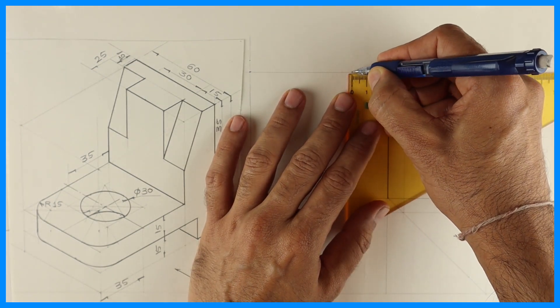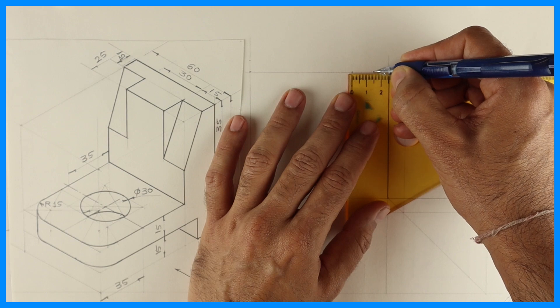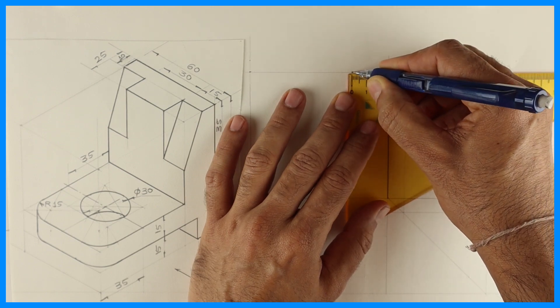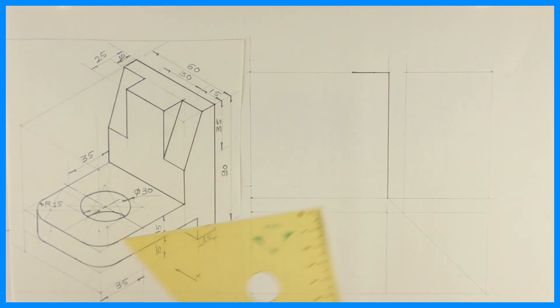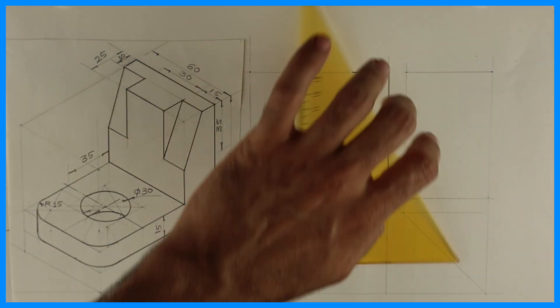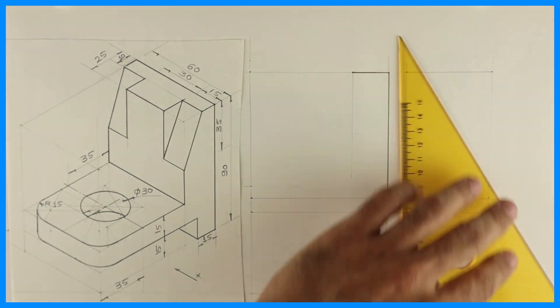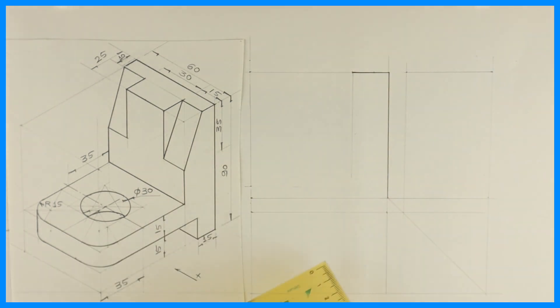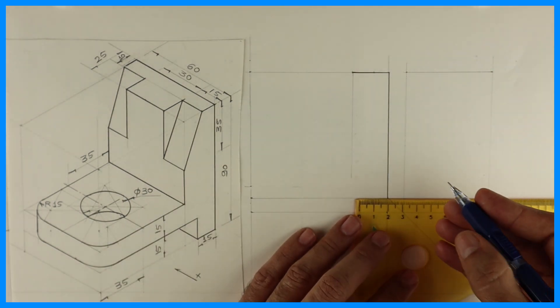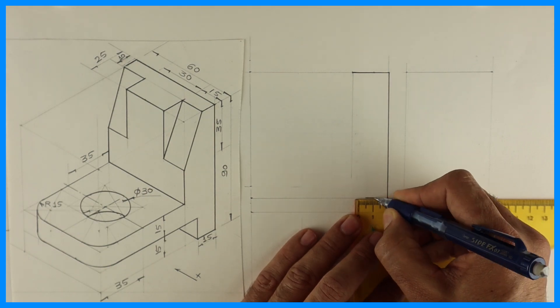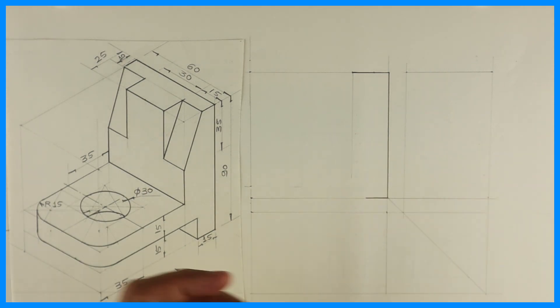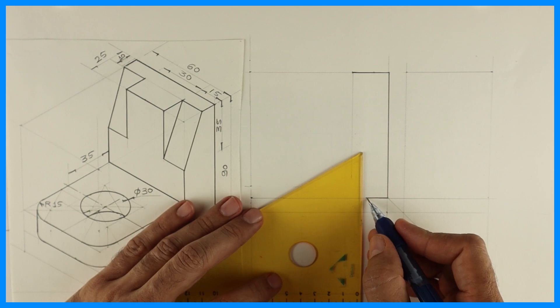Then we'll take 25mm in front view and we'll mark 10mm, then you go down straight. Here we'll take 15, then we'll go up by 15.